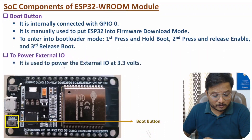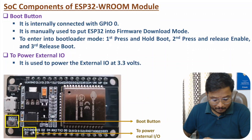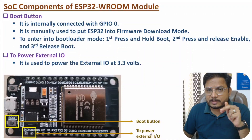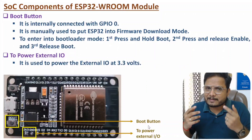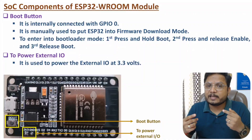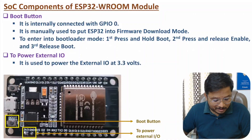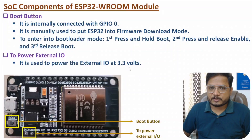Now let me discuss about the next SoC component, that is powering external IO. You can observe we have 3V3 and ground terminals. These two terminals are used to power external IO. In IoT applications, we use sensors and actuators, and we need to provide power to them. That power can be provided from these 3V3 and ground terminals, providing a supply of 3.3 volts.